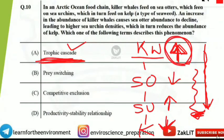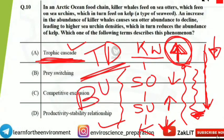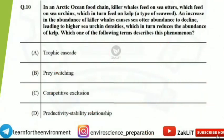Specifically, because the top-level consumer — killer whales — is controlling the entire food chain, this is called a top-down cascade. In contrast, a bottom-up cascade occurs when the primary producers or bottom-level organisms control the upper consumer populations, with effects moving from bottom to top through the trophic levels.